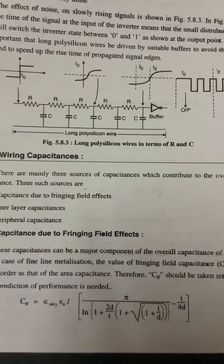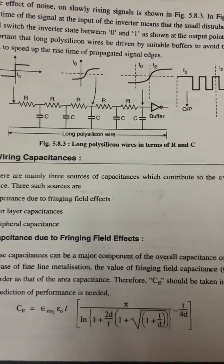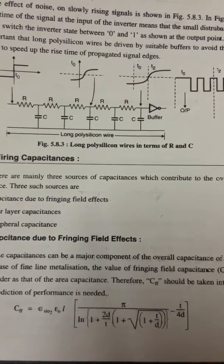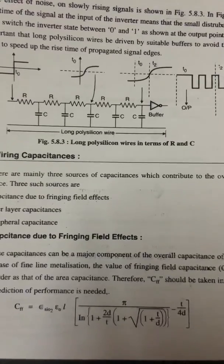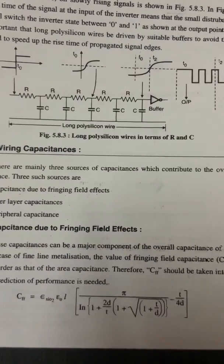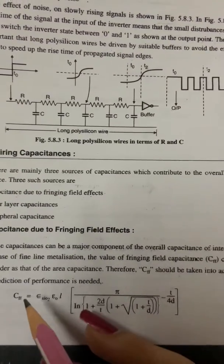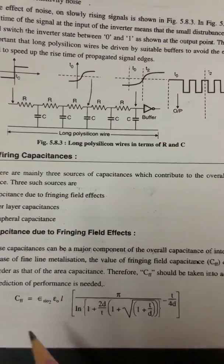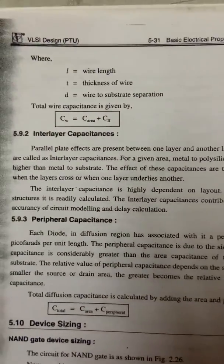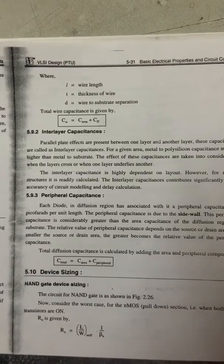In the formula for fringing field capacitance, small l is the length of the wire, small t is the thickness of the wire, and small d is the wire-to-substrate separation. Total wire capacitance equals area capacitance plus fringing field capacitance: Cw = C_area + Cff.